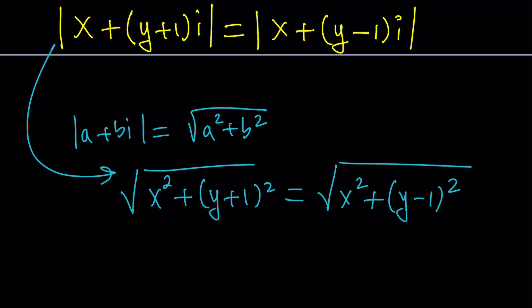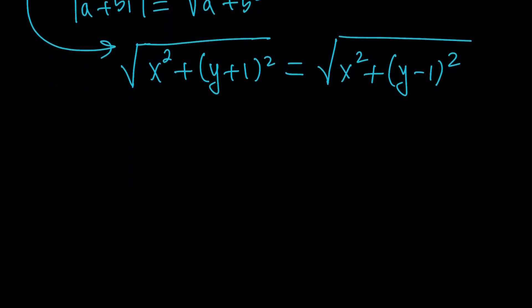Since both sides have square roots, and these are real numbers because X and Y are both real by definition, let's square both sides and get rid of the square roots. And then we're going to end up with X squared plus Y plus one squared equals X squared plus Y minus one squared.